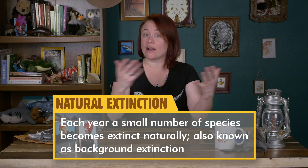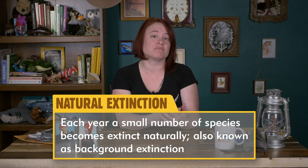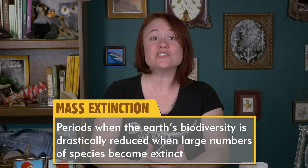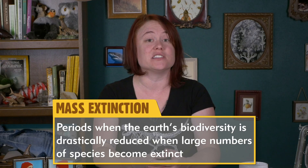Mass extinction events are important because of the disruptive effect they have on the way that biodiversity develops. So we've talked about two different kinds of extinction: natural or background extinction, where each year you lose a small number of species naturally, and mass extinction, where the Earth's biodiversity is drastically reduced and large numbers of species become extinct. In general, scientists agree that there have been five mass extinctions in Earth's history.